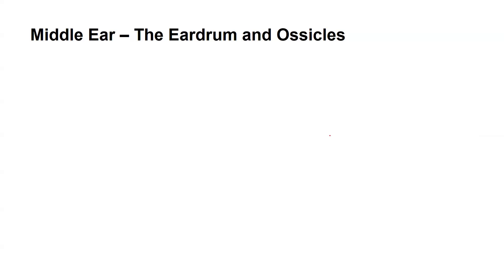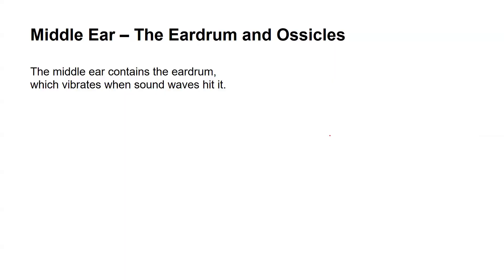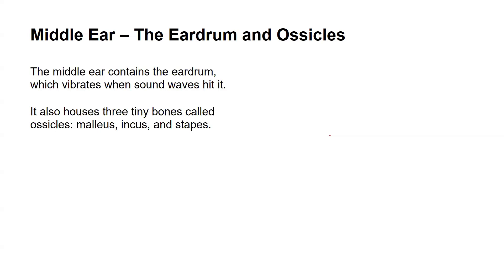The major role of the outer ear is to capture information from the environment and send it to the eardrum. After that, the middle ear contains the eardrum, which vibrates when sound waves hit it. From the pinna, the outer ear captures sound waves and sends them to the middle ear — directly to the eardrum.